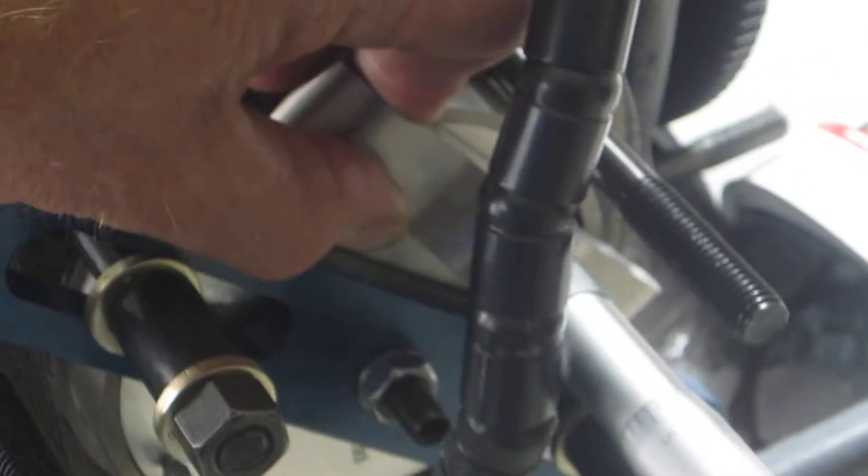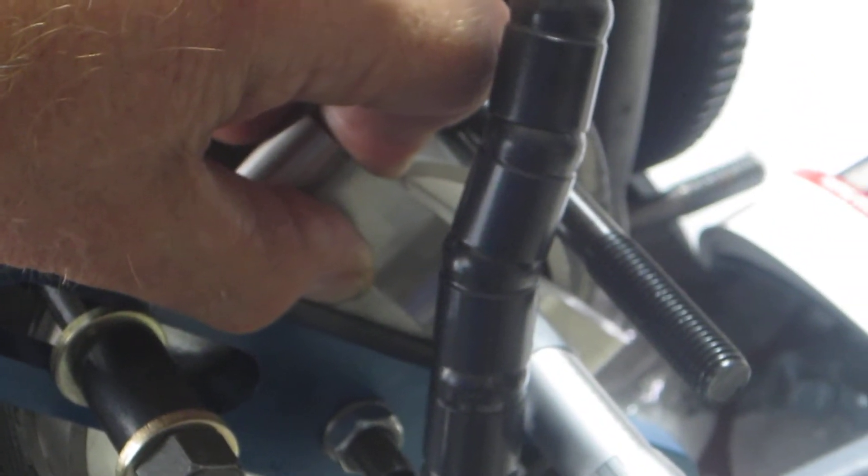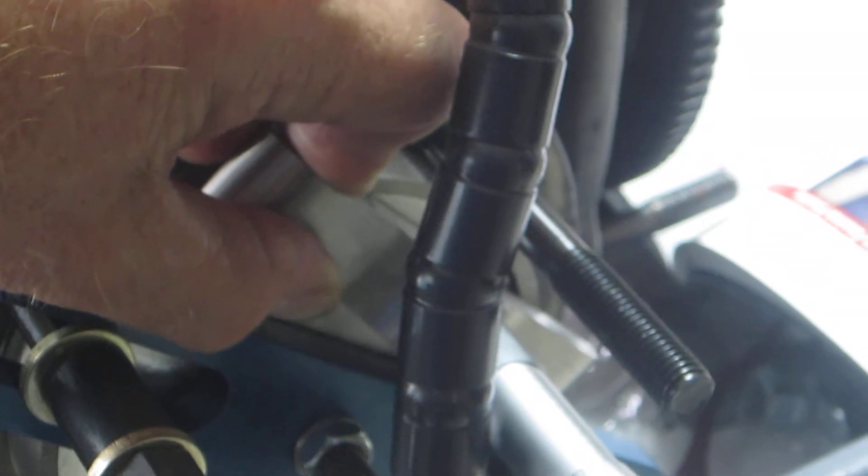as I mentioned, I've got my depth mic on top of the rim of the cylinder - this is number one cylinder - and it's showing more deck height than I'd like. As you can see, I've got this blue